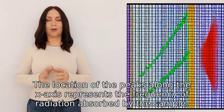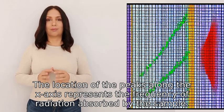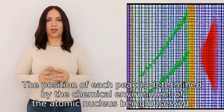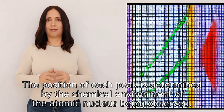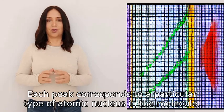The location of the peaks along the x-axis represents the frequency of radiation absorbed by the sample. The position of each peak is determined by the chemical environment of the atomic nucleus being observed. Each peak corresponds to a particular type of atomic nucleus in the molecule.